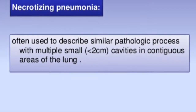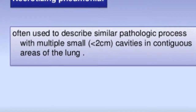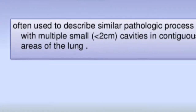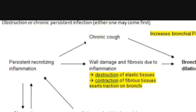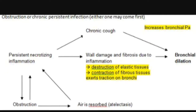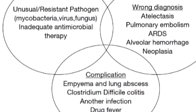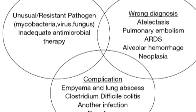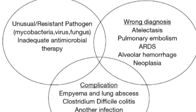A lung neoplasm may cavitate and mimic lung abscess. Aspiration of oropharyngeal secretions and subsequent abscess formation can occur in patients with altered consciousness, anesthesia, alcohol intoxication, sedative drugs, head injuries, cerebrovascular accidents, esophageal strictures, and during seizures.